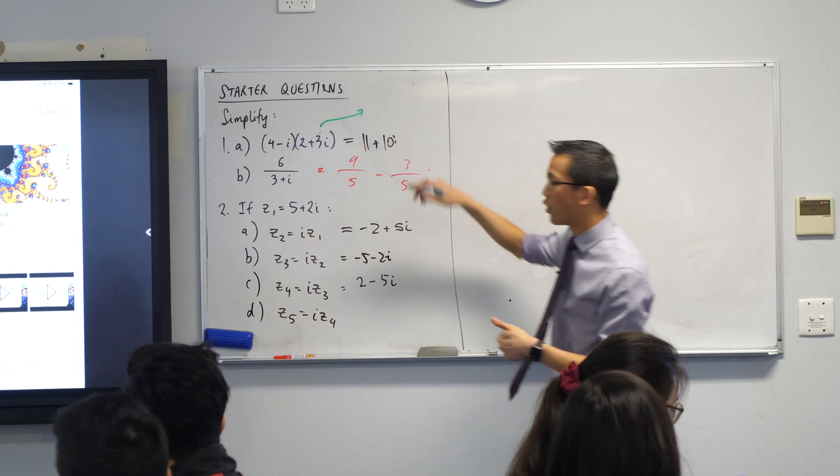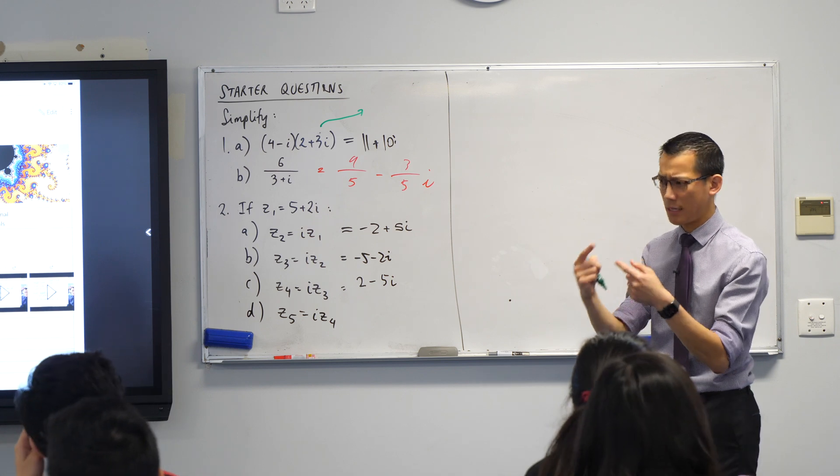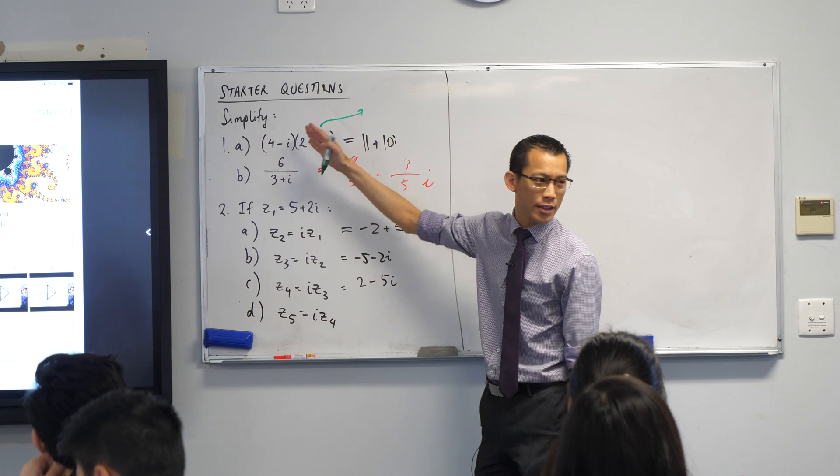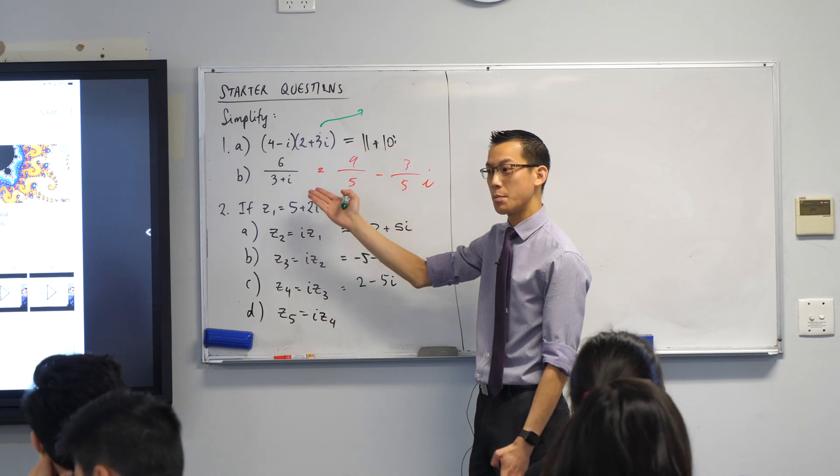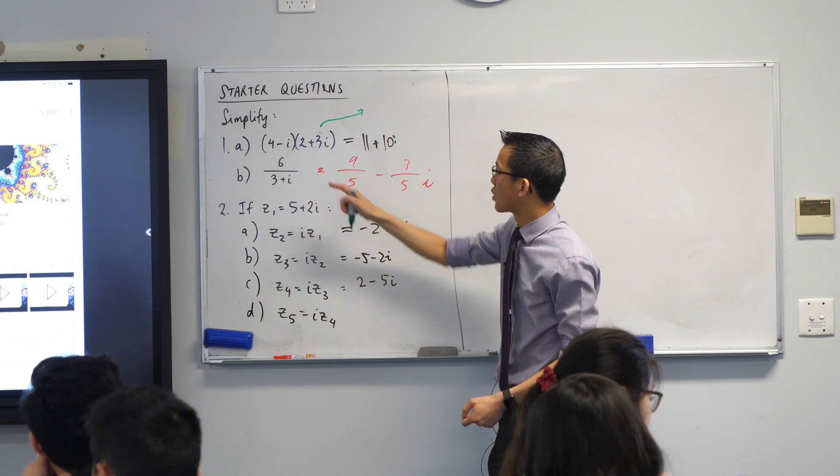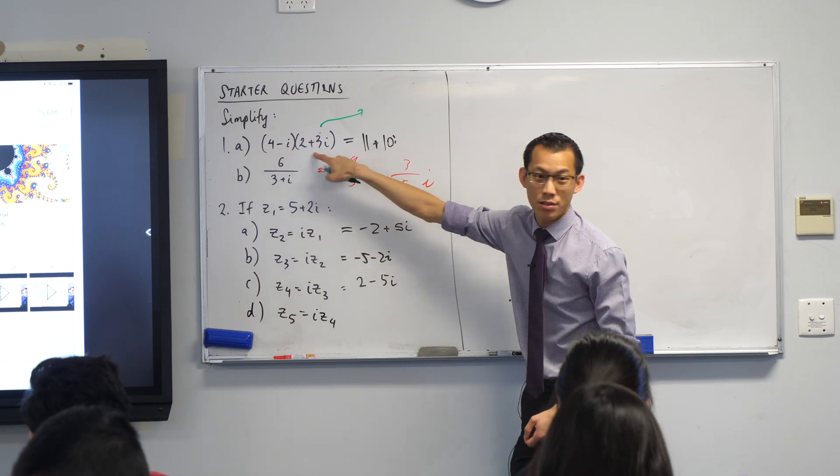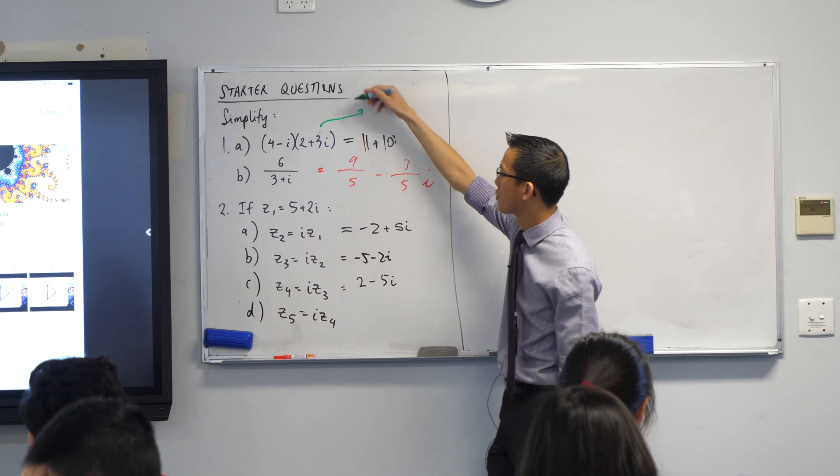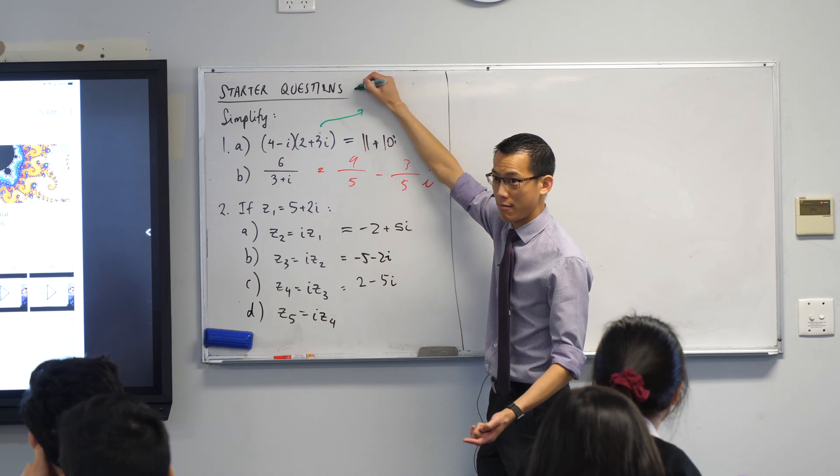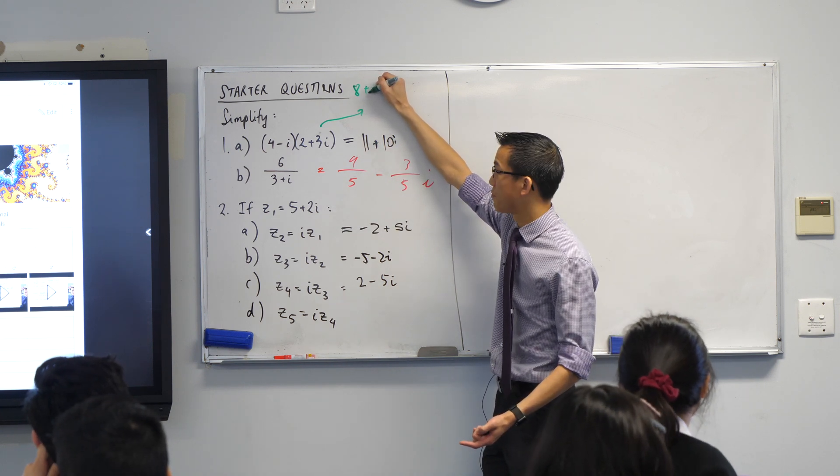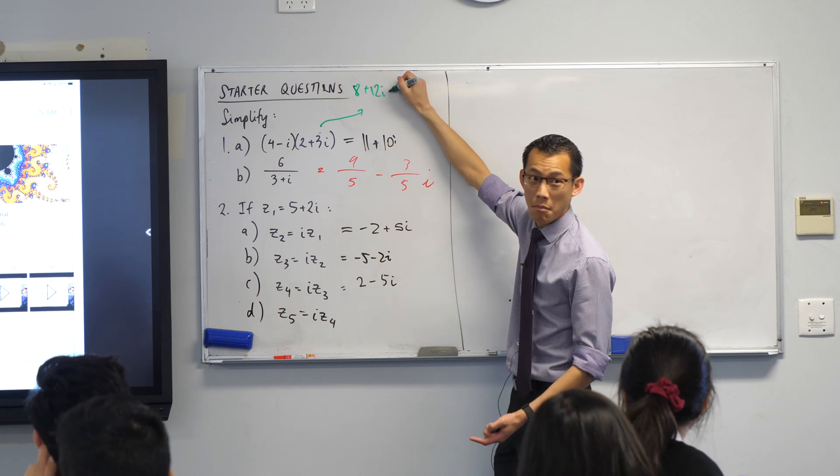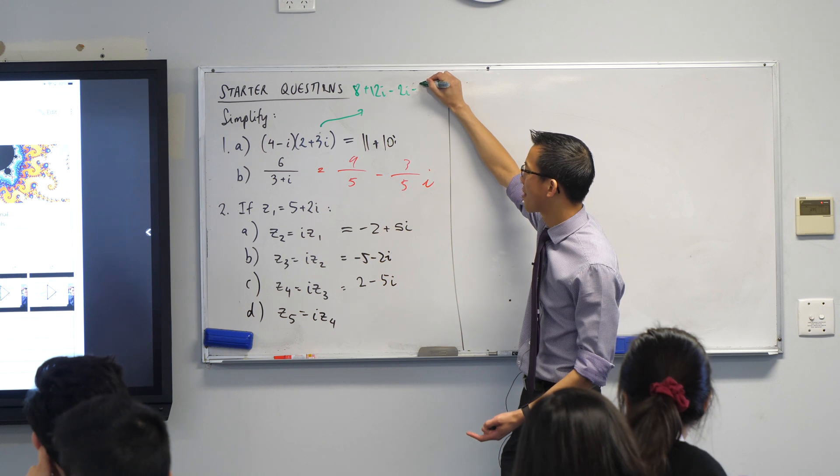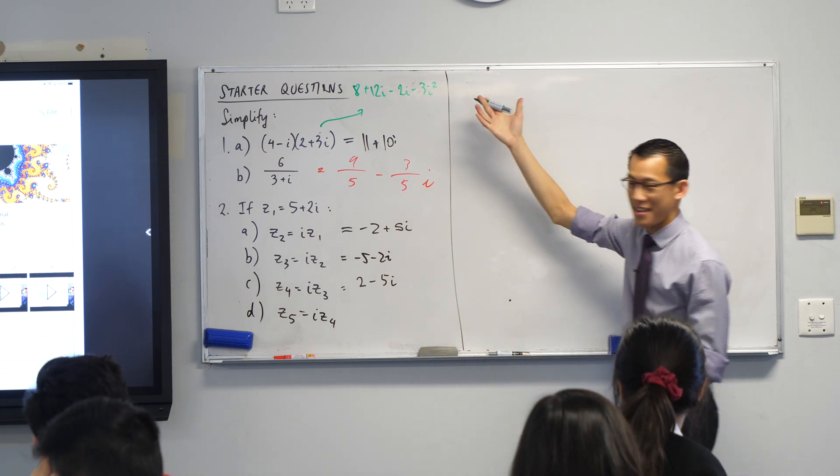Just before we leave it, let's just do one line of working together and make sure we know what we're doing. This is just like normal. If everything was all real numbers, we could handle the arithmetic very similarly. I'm going to distribute this 4 across to these two and then I'm going to distribute this minus i across to these two. So you're going to get, first line, help me out, 8 plus what? 12i, fantastic. Minus 2i minus 3i squared. Are you happy with that?